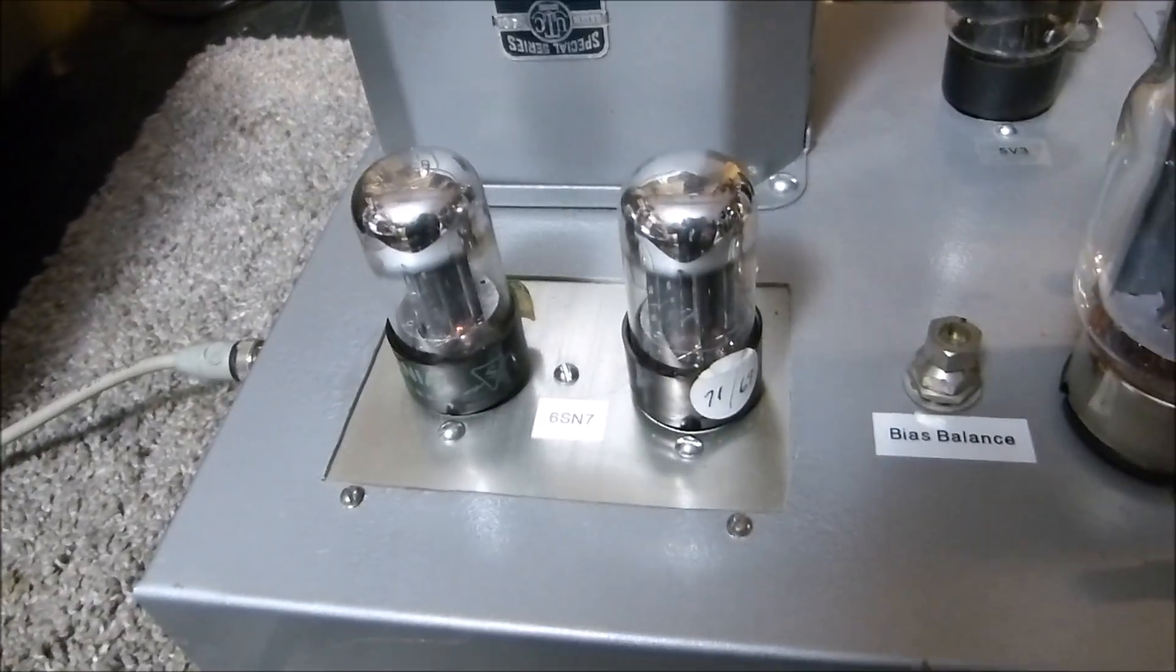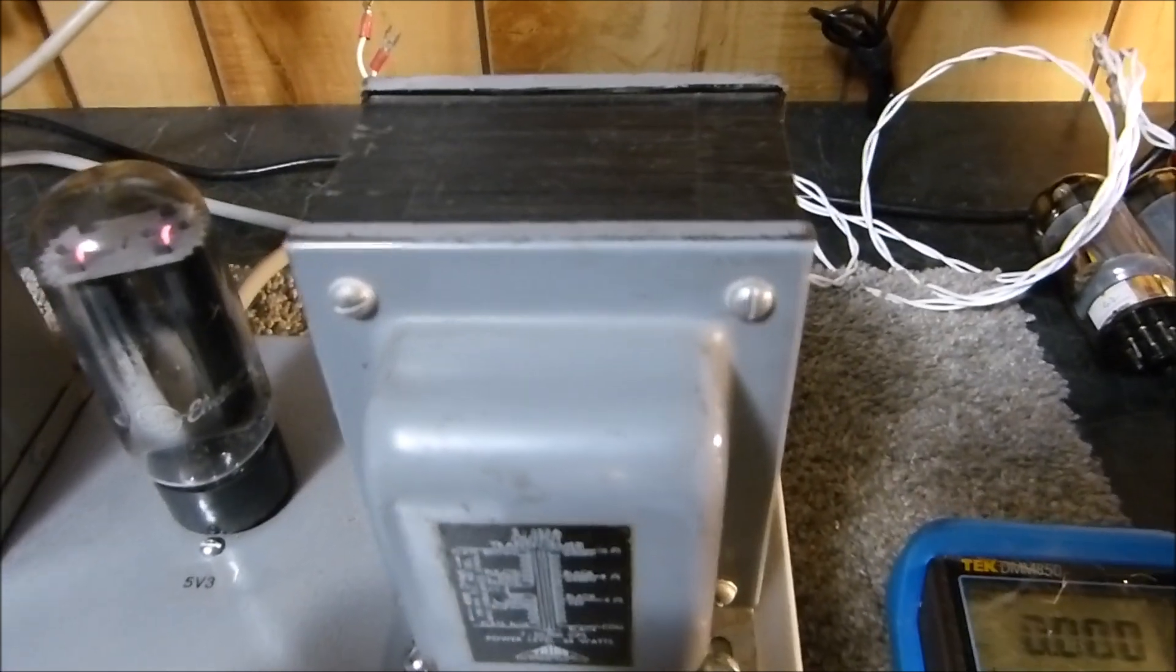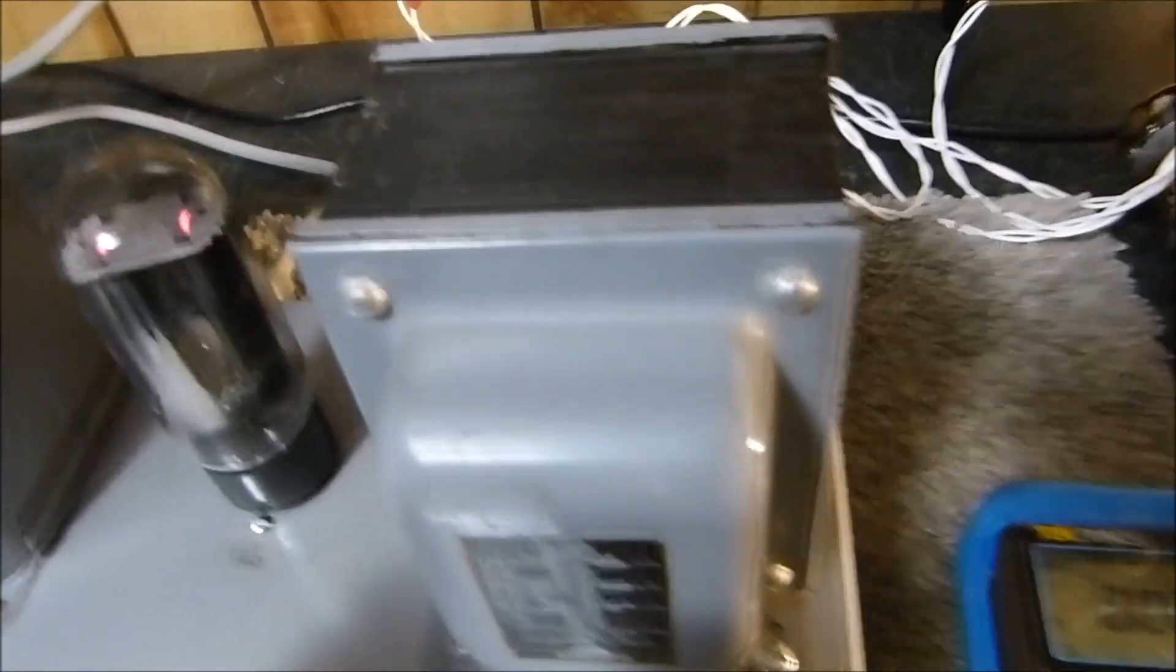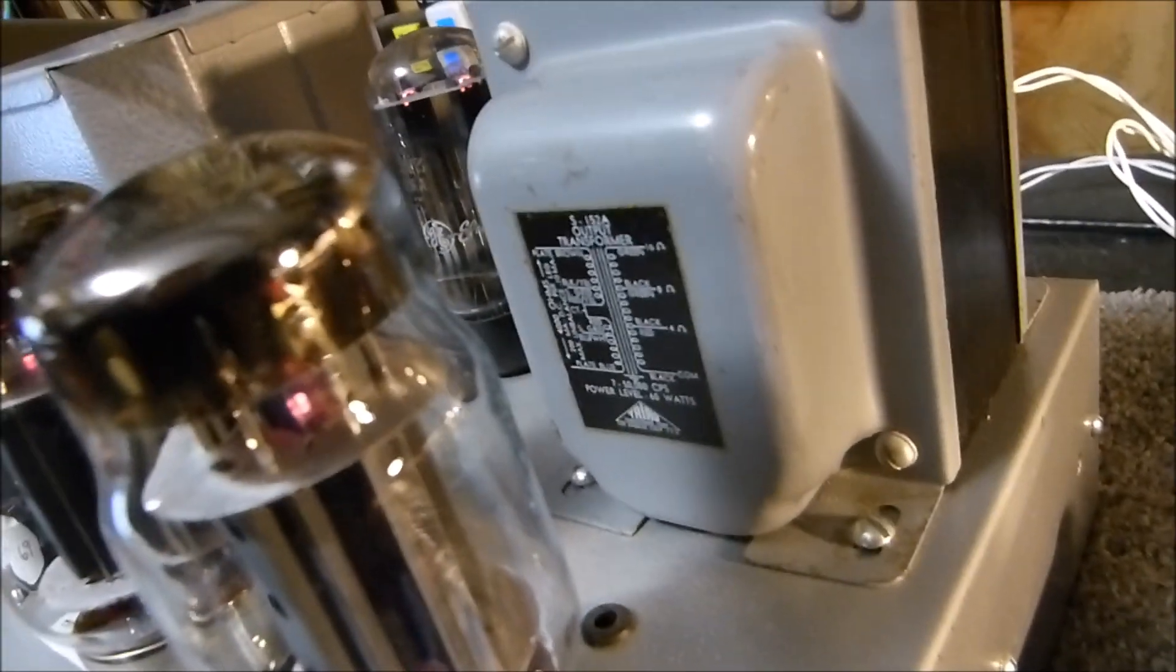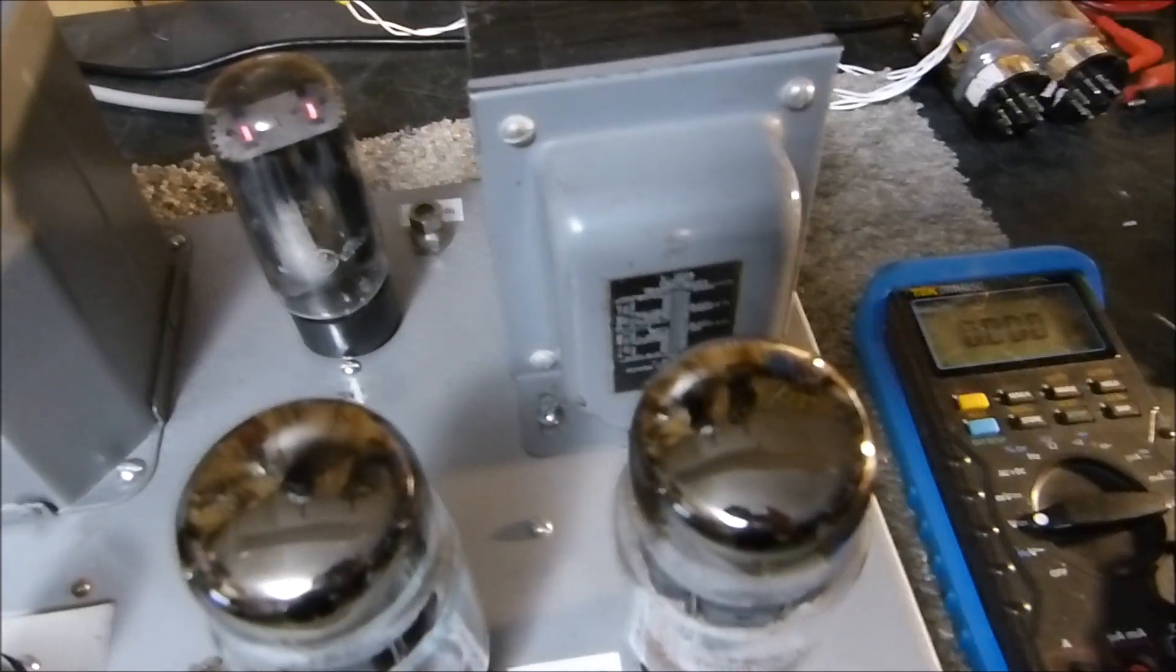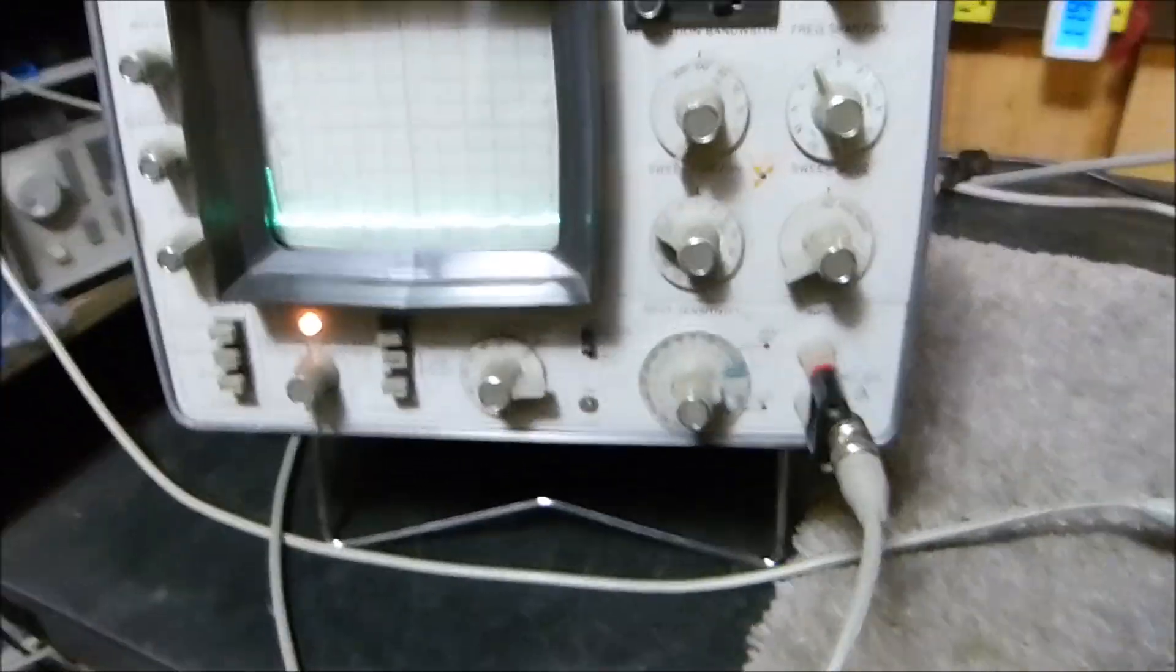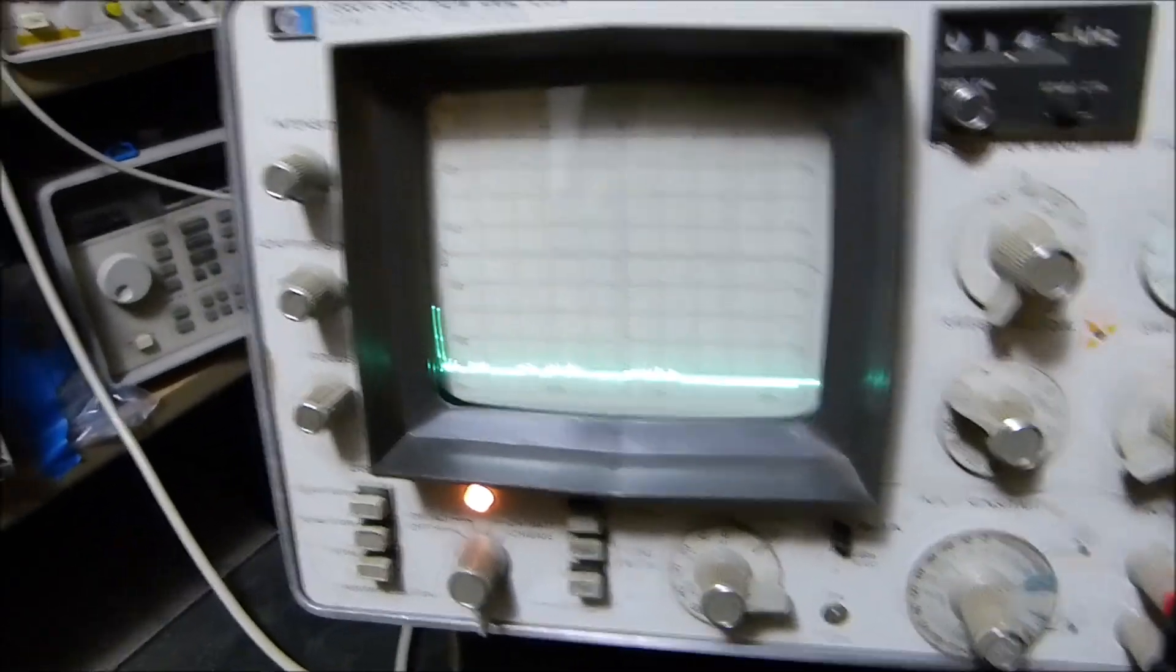We set the amount with this pot back here and then we set the balance with this one. These are nice KT88s with 6SN7s driving it. This is a Triad S152A output transformer. I think it's rated at 65 watts - from 7 to 50 kilohertz power level 65 watts. It's a really nice one with UL taps and all that kind of stuff.